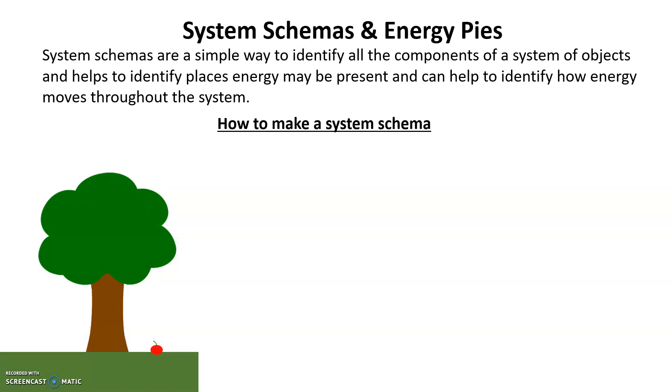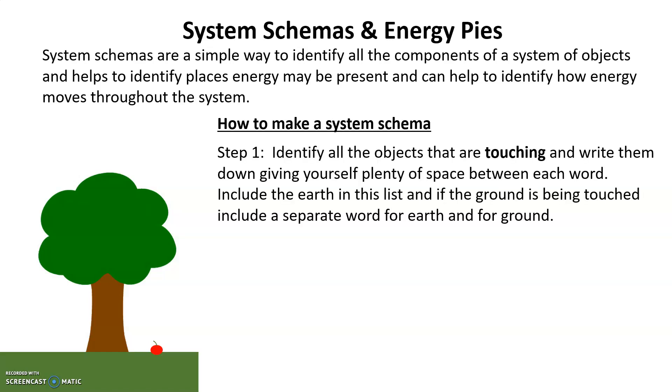How to make a system schema? In this case, we're looking at the apple falling from the tree. First, identify all the objects that are touching and write them down, giving yourself plenty of space. Include the earth in this list. If the ground is also being touched, include both earth and ground as separate words. So in this example, the tree, the apple, the earth, and the ground are in the system schema.